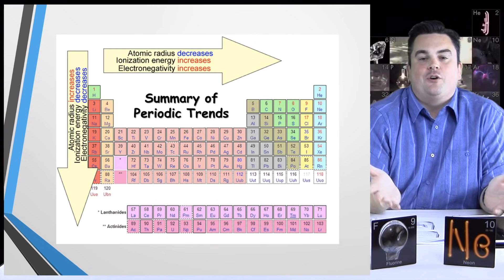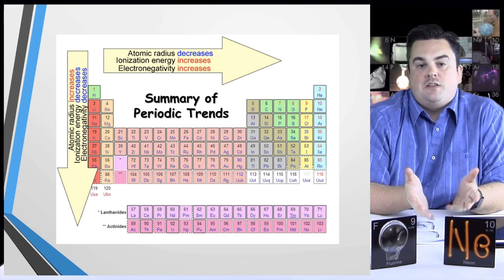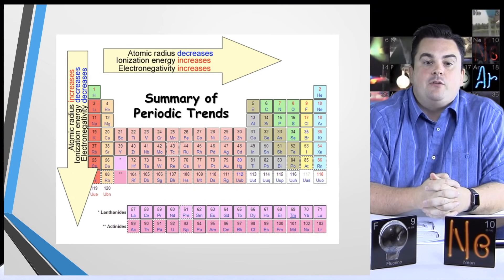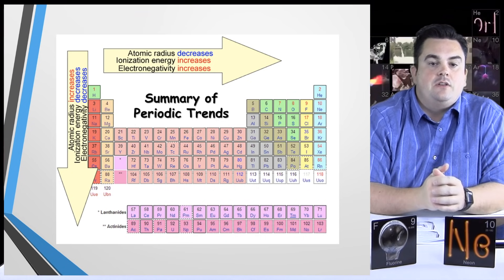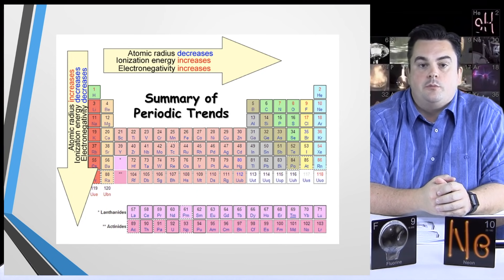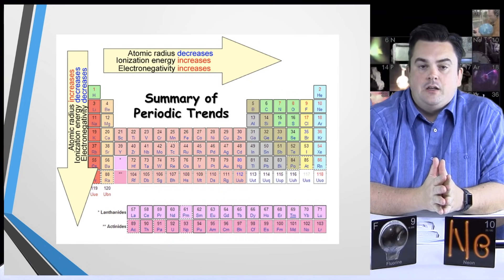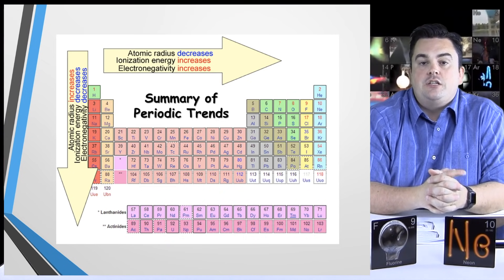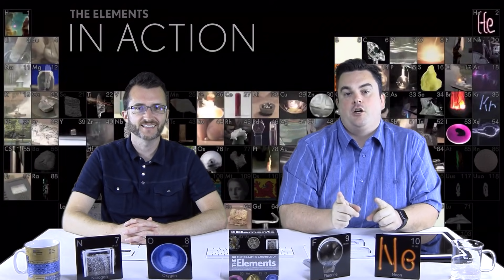Here we have an image that summarizes everything discussed. Looking at trends within a group going down: atomic radius increases, while ionization energy and electronegativity both decrease. Going across a period from left to right: atomic radius decreases, and ionization energy and electronegativity both increase. That's going to do it for today's episode on periodic trends. Later, nerds!